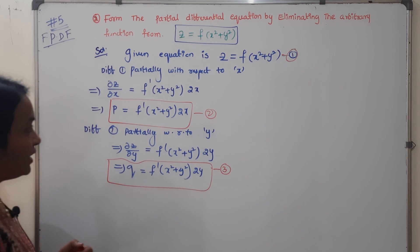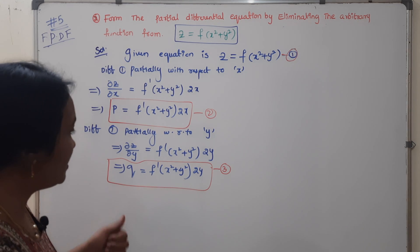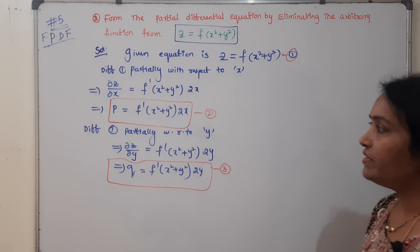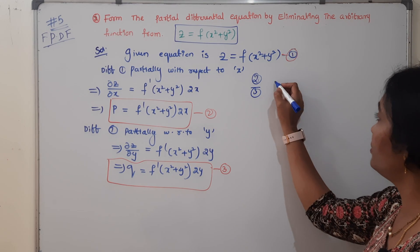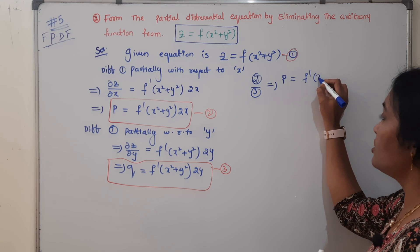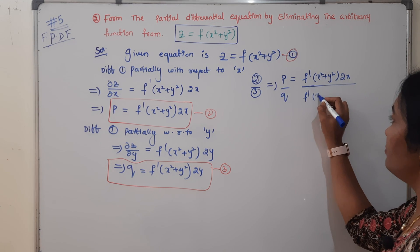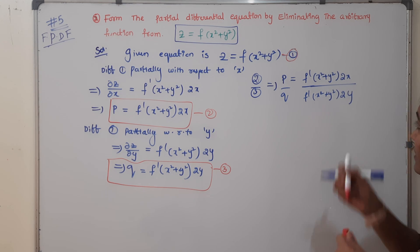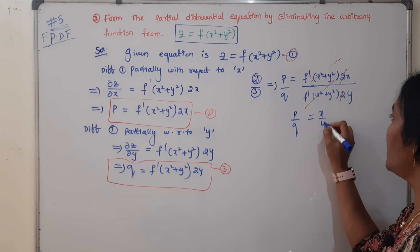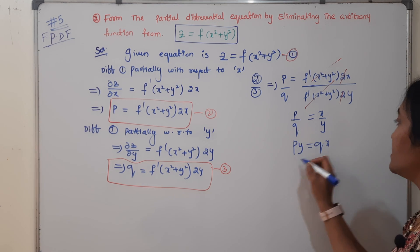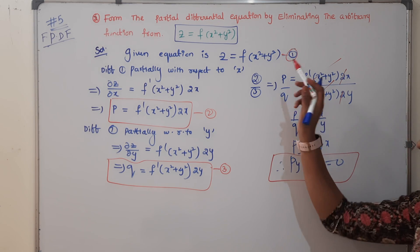Dividing equation 2 by equation 3: p over q equals f dash(x²+y²) times 2x divided by f dash(x²+y²) times 2y. The f dash terms cancel and the 2s cancel, leaving p/q equals x/y. Cross-multiplying: py equals qx, so py minus qx equals 0. This is the required partial differential equation for the given function.